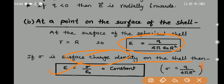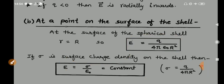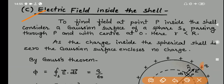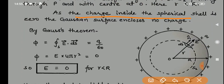Second part done. Third part: electric field inside the spherical shell. To find the electric field at point P inside the shell, consider a Gaussian surface S₂ passing through point P with center O. Here small r is less than capital R, because point P is inside the shell. The charge inside the spherical shell is zero — there is no charge on the inside of a hollow shell.